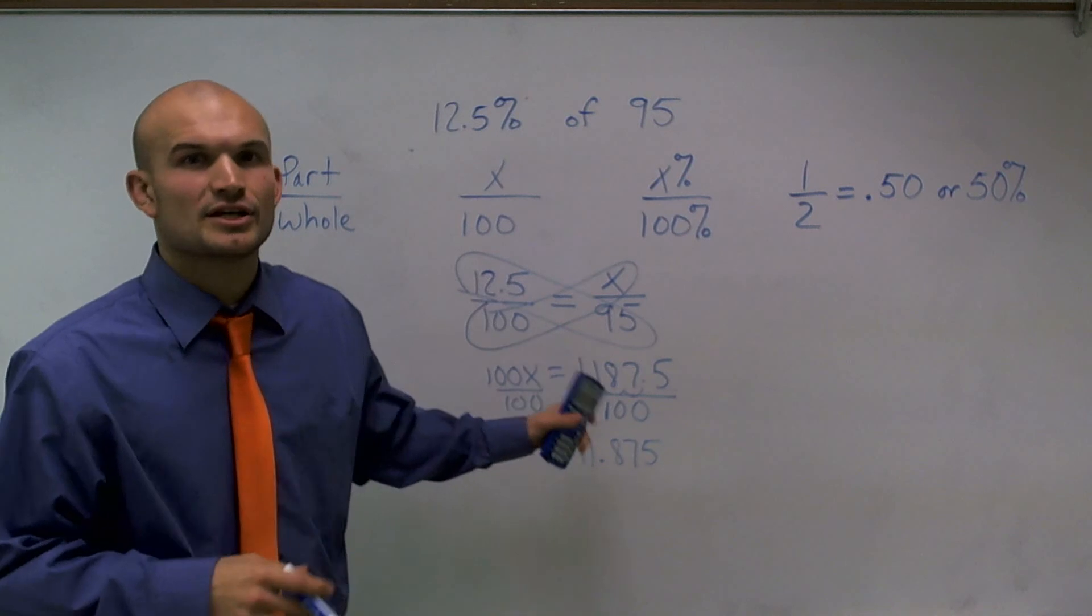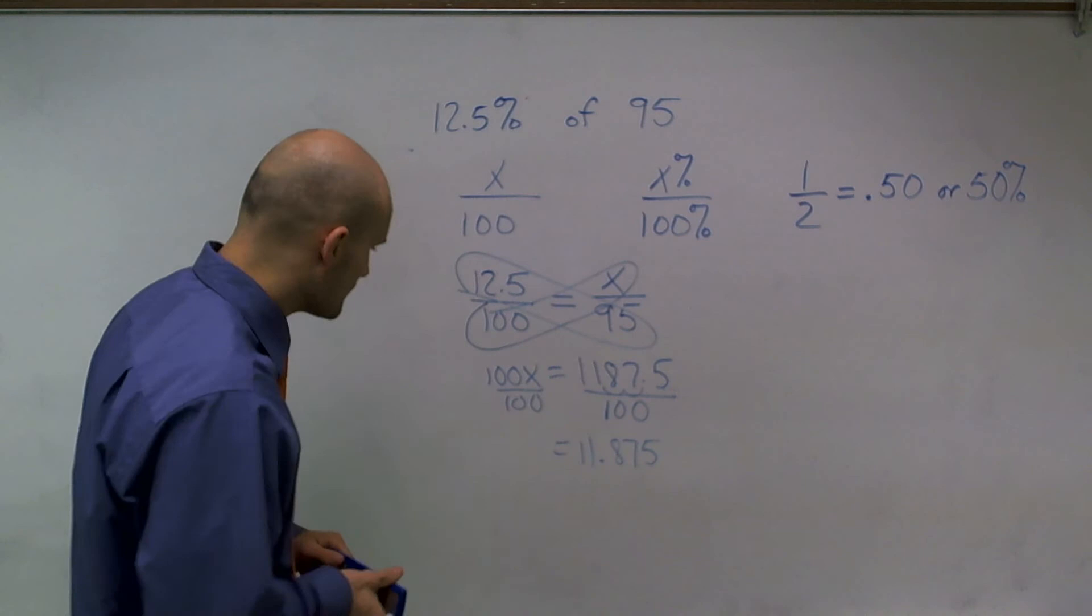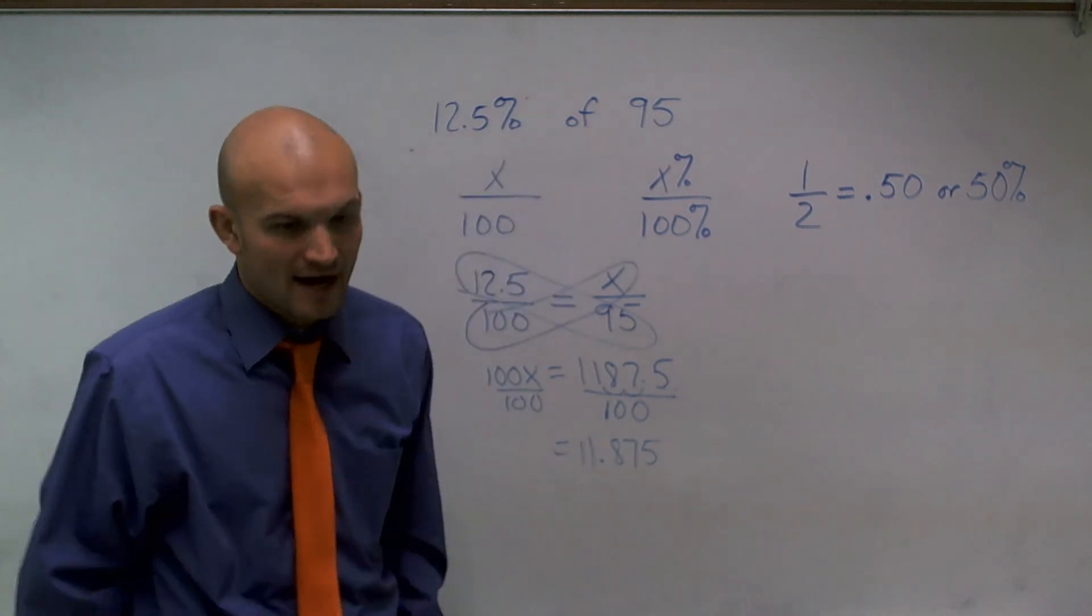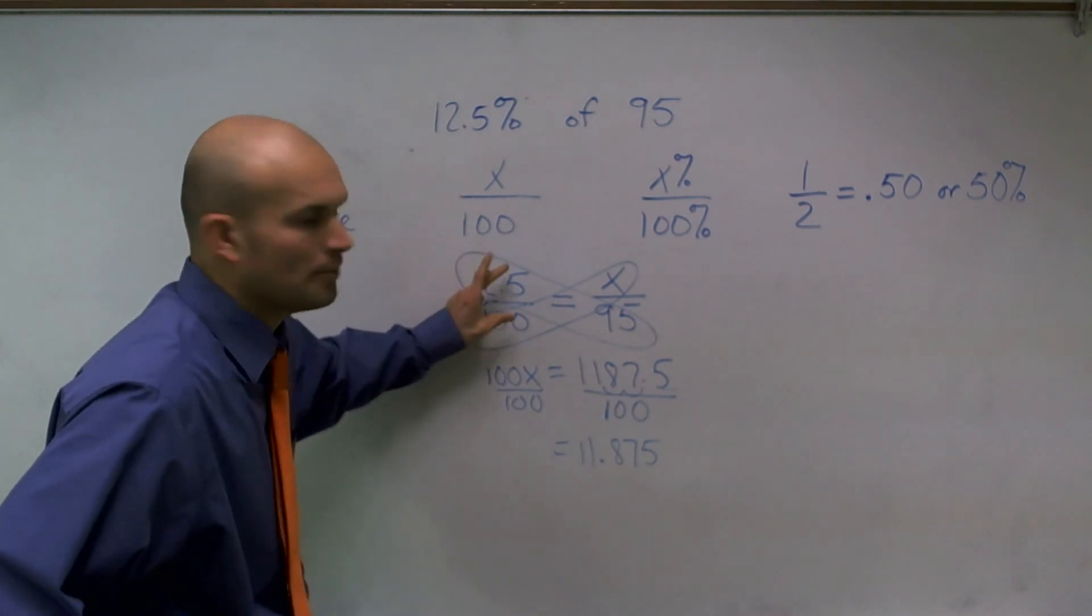Now, this is kind of the generic, longer way I wanted to show you. But I want to explain maybe a little bit quicker way. So a quick way to look at this is if I have 12.5% of 95, what that means is, remember, 12.5% is a fraction. It's 12.5 out of 100.